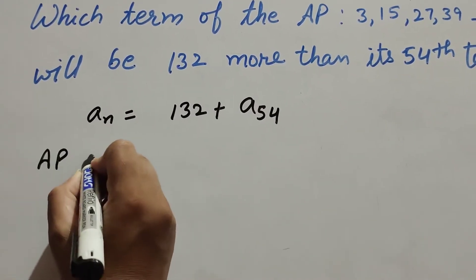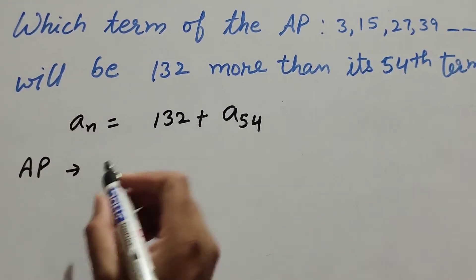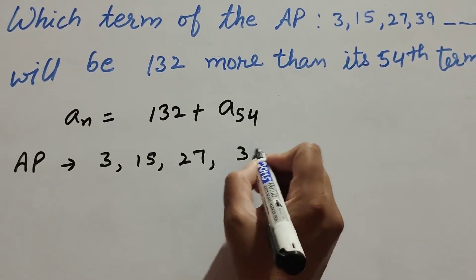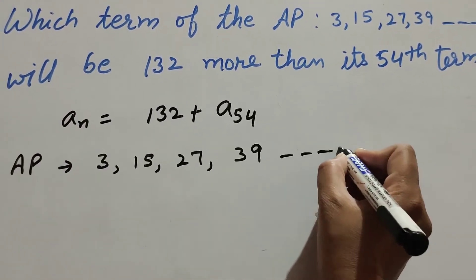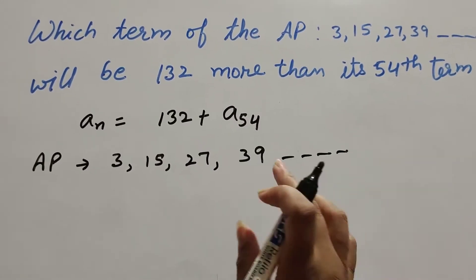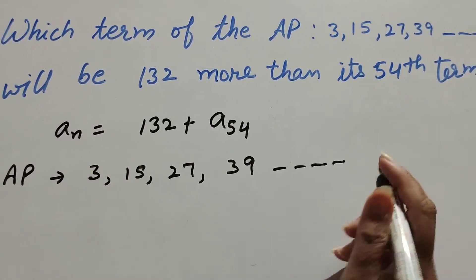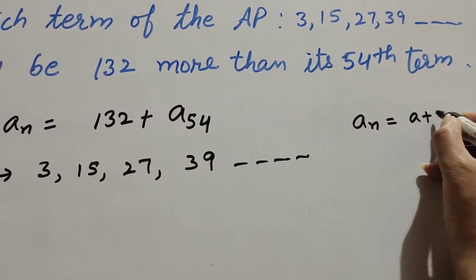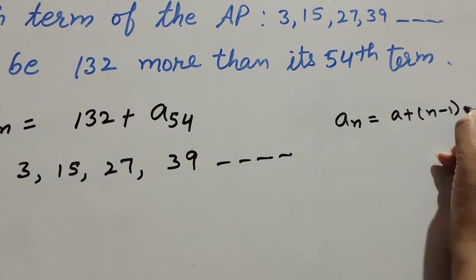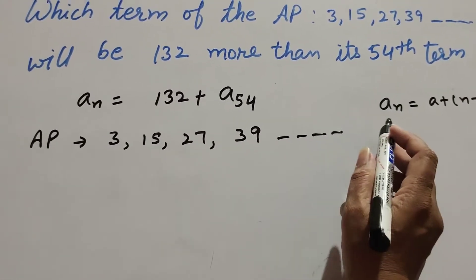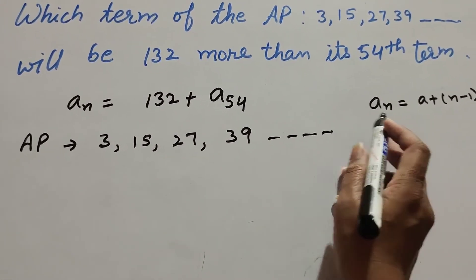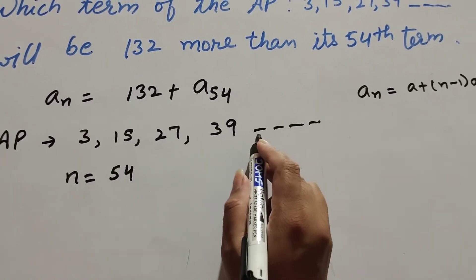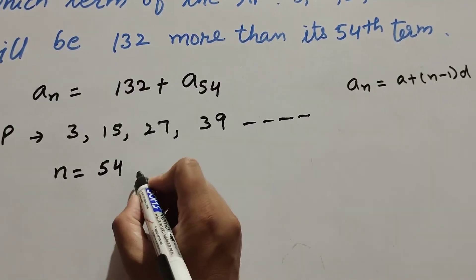The AP series given is 3, 15, 27, 39, and so on. First we find the 54th term of the AP. To find the 54th term we use the formula: a_n = a + (n − 1)d.